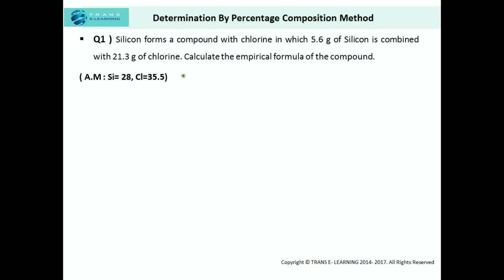The first question: Silicon forms a compound with chlorine in which 5.6 grams of silicon is combined with 21.3 grams of chlorine. Calculate the empirical formula of the compound. The atomic mass of silicon is given as 28, whereas that of chlorine is 35.5. We need to find this ratio — that is, x and y in the empirical formula.